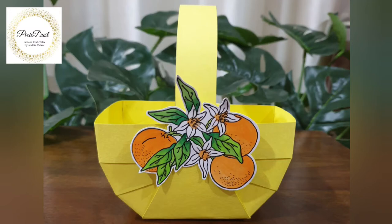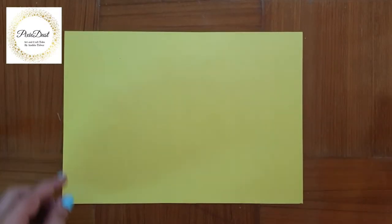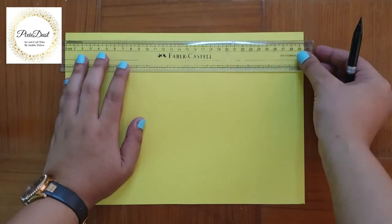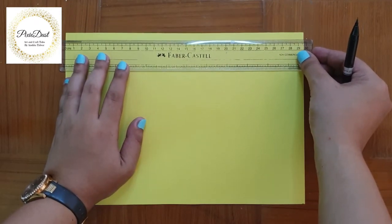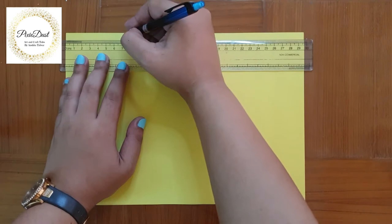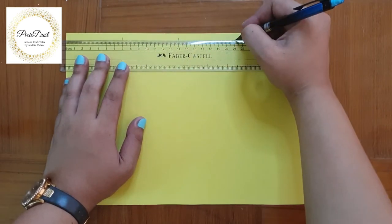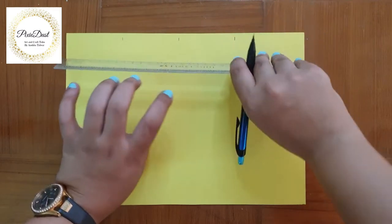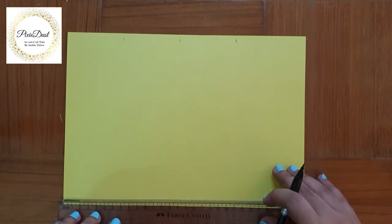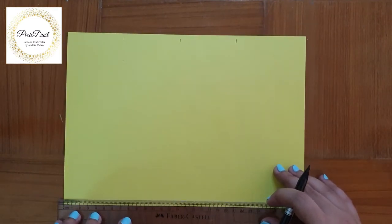Hello everybody, today I'm going to demonstrate how to make a paper basket. I've taken an A4 size sheet. Keeping my sheet horizontally, I'm going to mark three points at 7 centimeters, 14 centimeters, and 21 centimeters. Now I'm going to make the similar points at the bottom of the sheet.